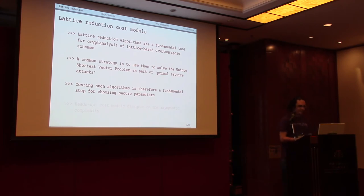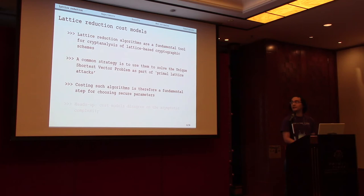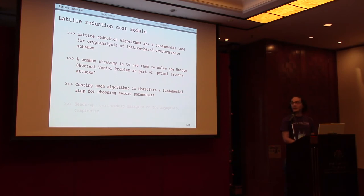Lattice reduction cost models. Lattice reduction algorithms are part of the fundamental toolkit for doing cryptanalysis. They've been used for classical schemes like RSA, but in particular they're very important for lattice-based schemes. A common strategy is that when we have some encryption scheme, there's some secret we're trying to protect, and we might be able to construct a lattice that contains that secret encoded as a very short vector. Hence, being able to find short vectors using lattice reduction is a way of breaking the scheme. Being able to cost how efficient we are at finding short vectors is fundamental for choosing secure parameters.